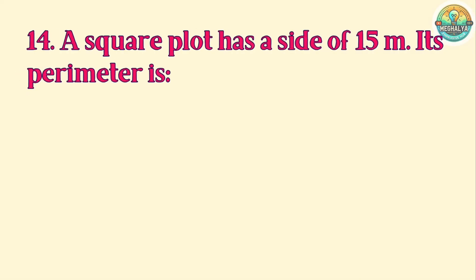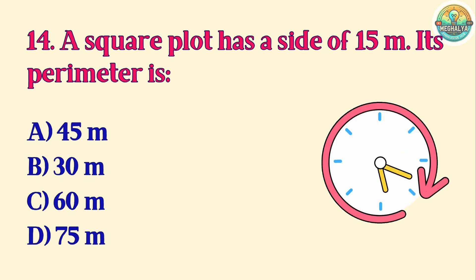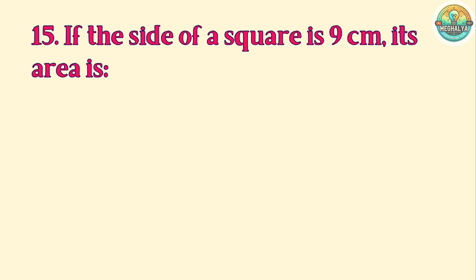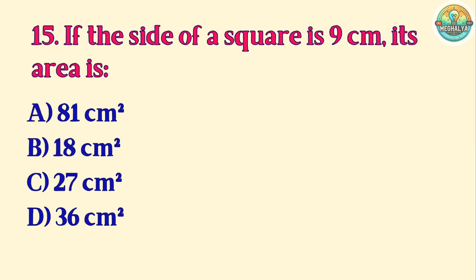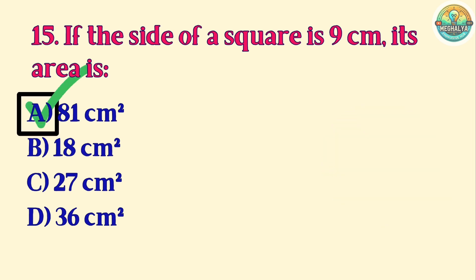Question 14. A square plot has a side of 15 meters. Its perimeter is: A. 55 meters. B. 30 meters. C. 60 meters. D. 75 meters. Correct answer is C. 60 meters. Question 15. If the side of a square is 9 centimeters, its area is: A. 81 square centimeters. B. 18 square centimeters. C. 27 square centimeters. D. 36 square centimeters. Answer is A. 81 square centimeters.